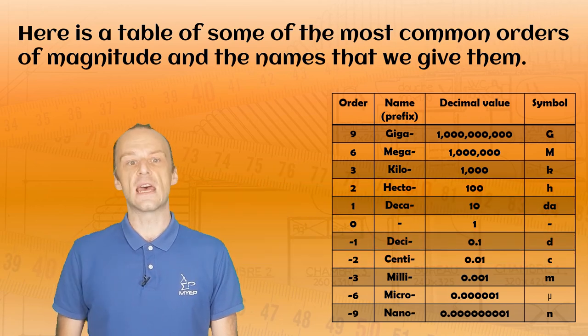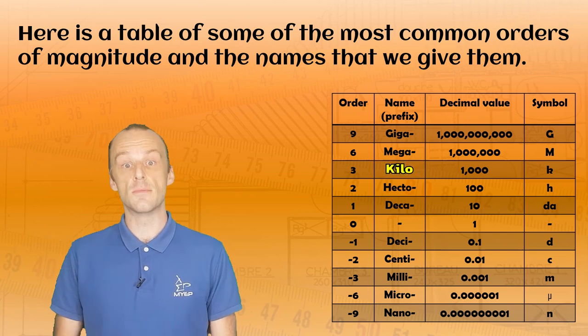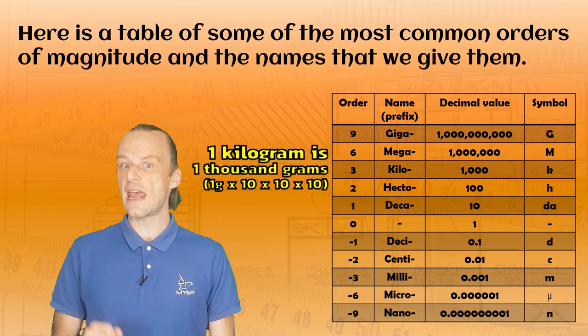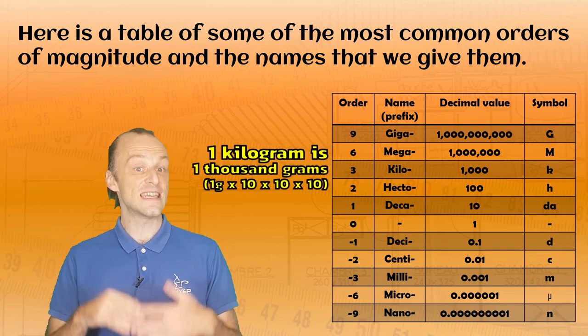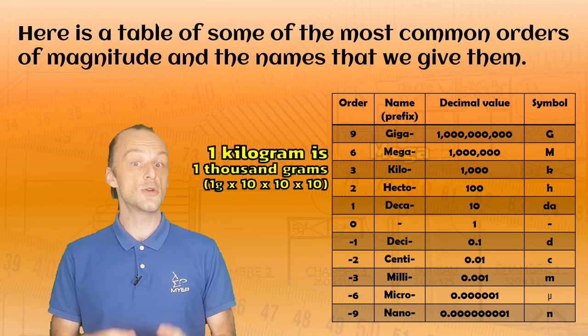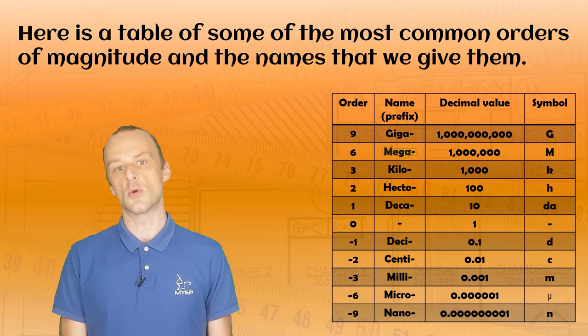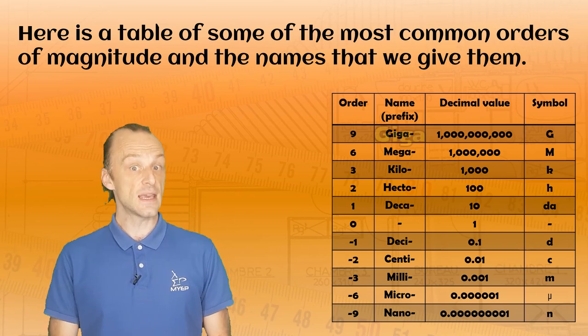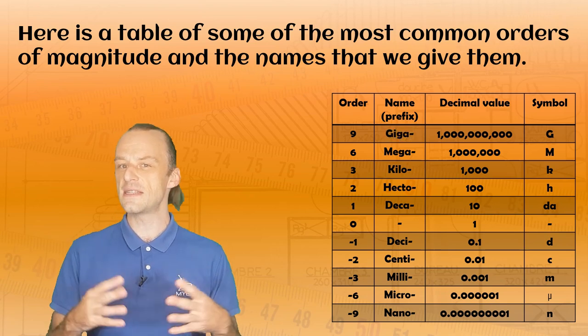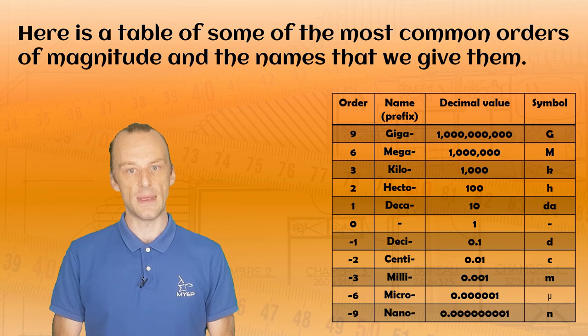If we go up the table, you can see kilo, like in kilogram or kilometre. A kilogram is three factors of ten bigger. In other words, it's a thousand times bigger. And above that, we go to mega, which is a million times bigger, or six orders of ten. Giga is a billion times bigger, and some of you might even be familiar with tera, which makes a number a trillion times bigger.